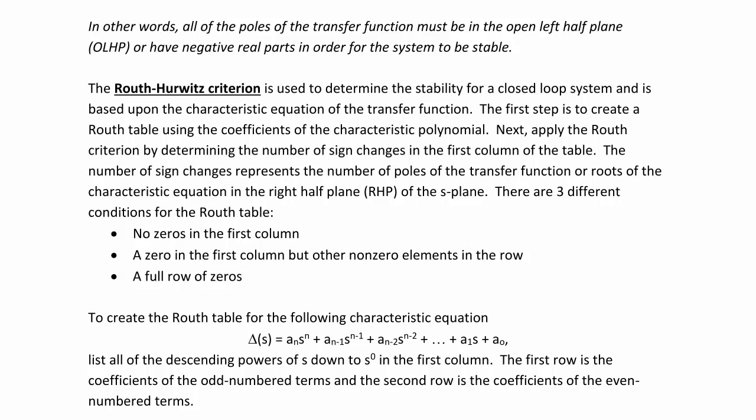The Routh-Hurwitz Criterion is used to determine stability for a closed-loop system and is based upon the characteristic equation of the transfer function. The first step is to create a Routh table using the coefficients of the characteristic polynomial. Next, apply the Routh criterion by determining the number of sign changes in the first column. The number of sign changes represents the number of poles in the right-half plane. There are three different conditions: no zeros in the first column, a zero in the first column but other non-zero elements in the row, or a full row of zeros.